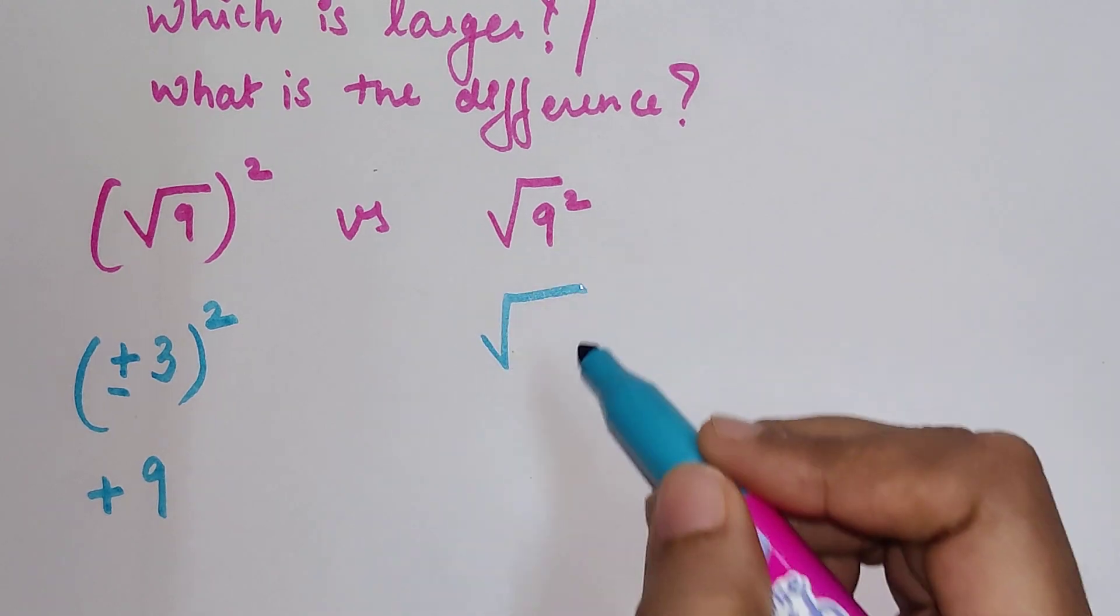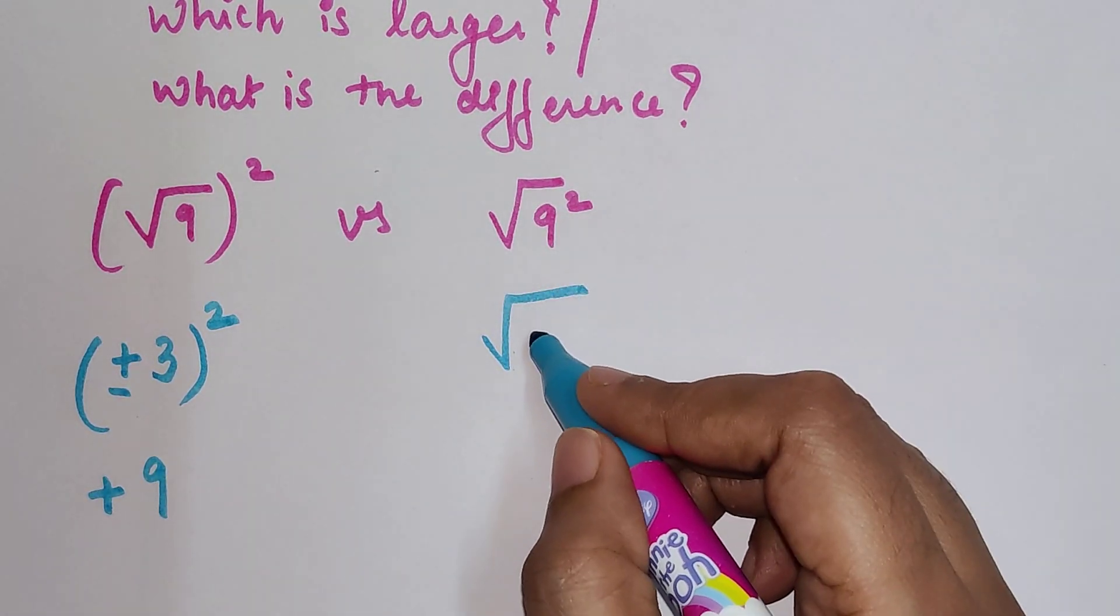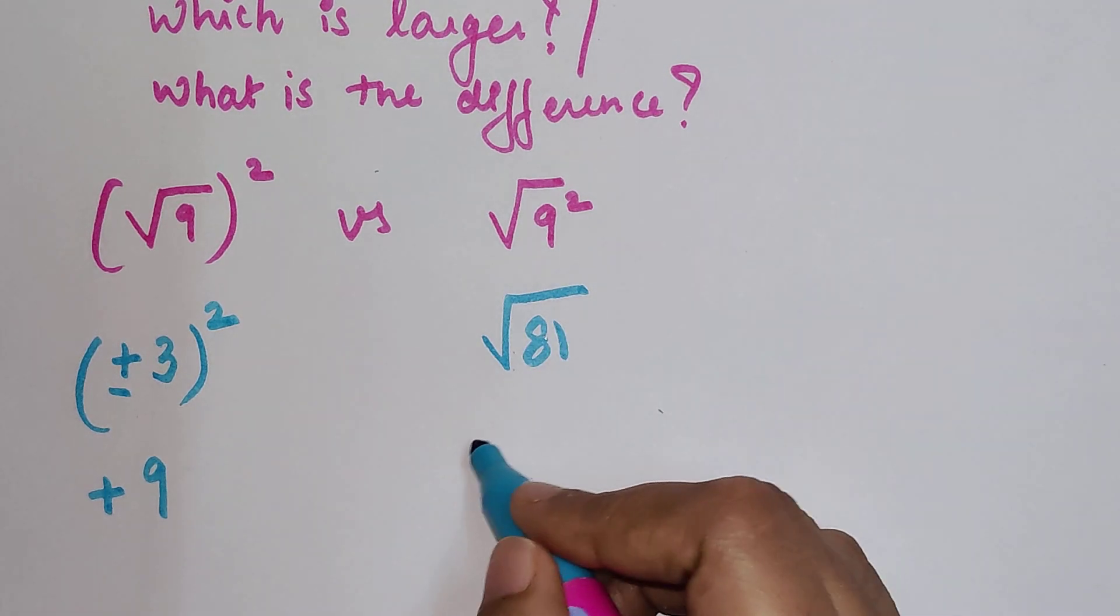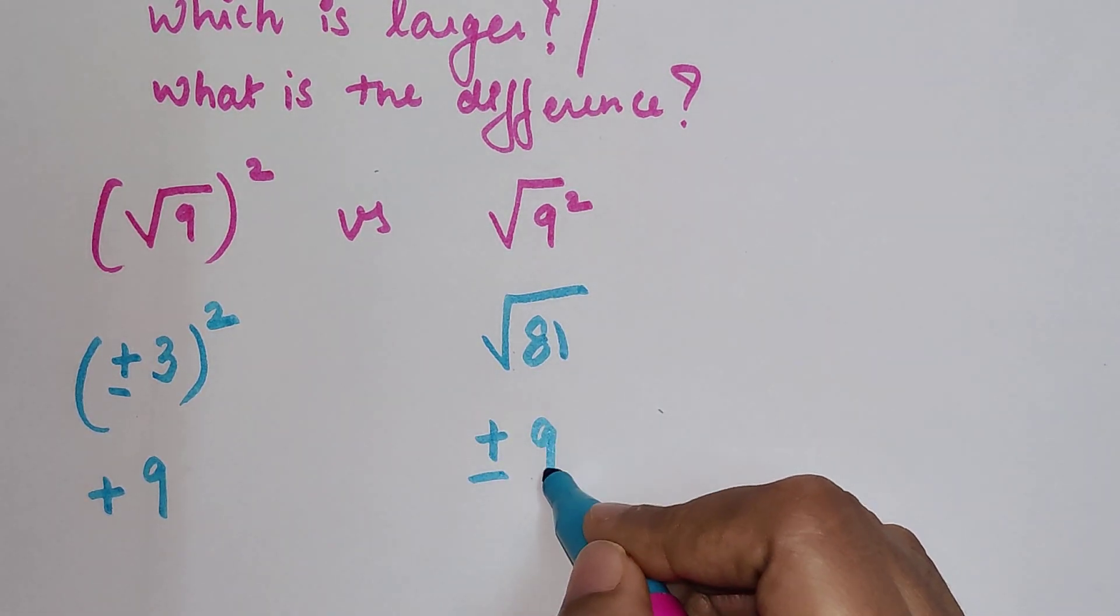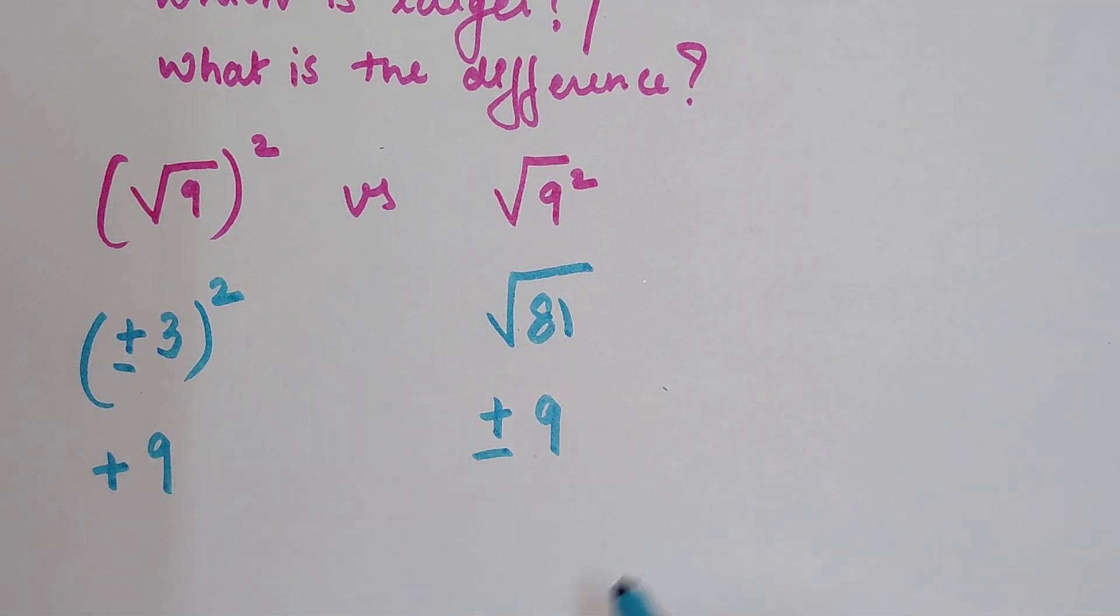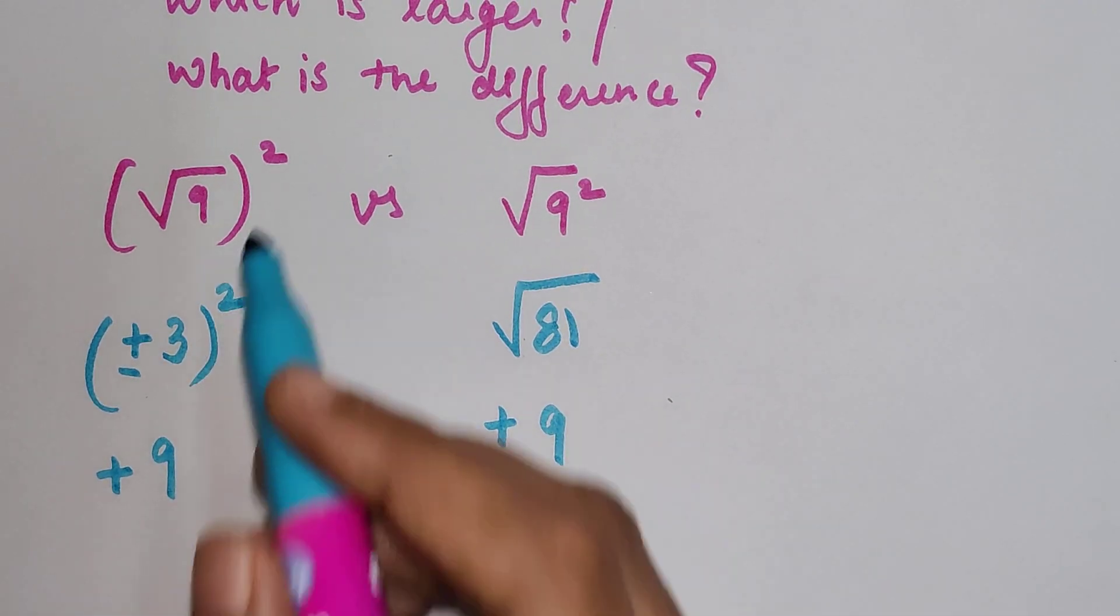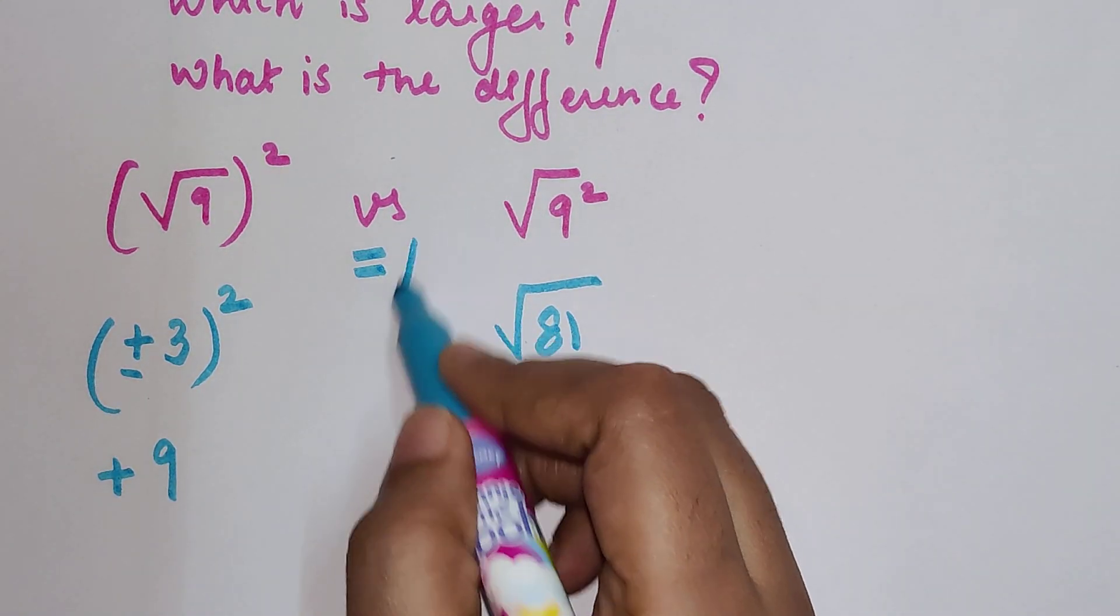And then we will take a square of that. So when you do a square of that, you get only positive 9 because square of a negative number will always get you a positive value.